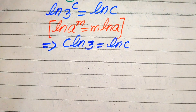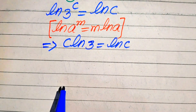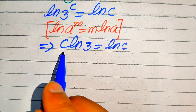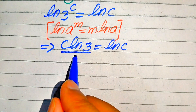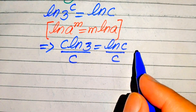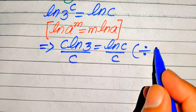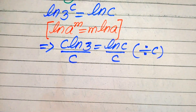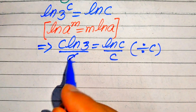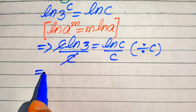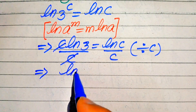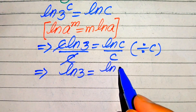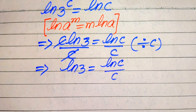In the next step we move our variable terms to the right hand side. In order to do that, we divide both sides by c. After dividing by c, the c on the left cancels, and we get log of 3 equals log of c divided by c.